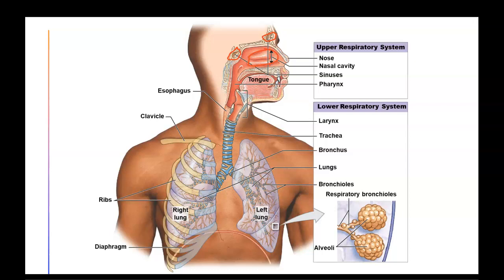The pharynx is the opening that runs from the back of the nasal cavity down toward the larynx. Depending on location, it's divided into three sections: the nasopharynx, behind the nasal cavity; the oropharynx, behind the oral cavity; and the laryngopharynx, the section closest to the larynx.